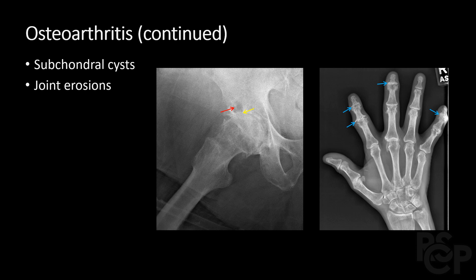Some final points about osteoarthritis. The red arrow represents a large subchondral cyst in the right acetabulum. The yellow arrow represents severe right hip joint space narrowing, most pronounced superiorly, unlike rheumatoid arthritis where joint space narrowing is more uniformly concentric. The blue arrows show areas of erosive osteoarthritis involving the PIP and DIP joints. It can be easy to confuse this for erosions from rheumatoid arthritis, but unlike rheumatoid arthritis, there is involvement of the DIP joints with corresponding osteophytes and subchondral sclerosis.